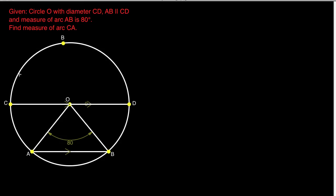Here's the first problem. We're given a circle with center O, and diameter CD right across here. We're also given that the line AB is parallel with this diameter CD. The measure of the angle AOB is 80 degrees, and it intersects the circle at those points which define that parallel line AB. The problem is to find the measure of arc CA.